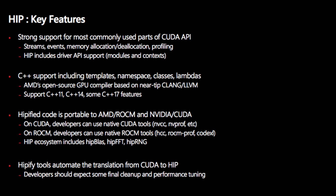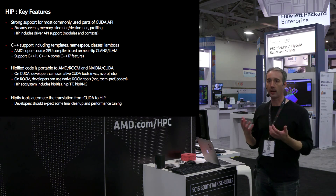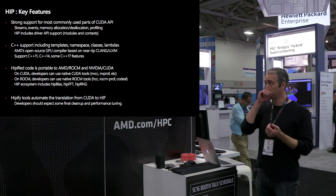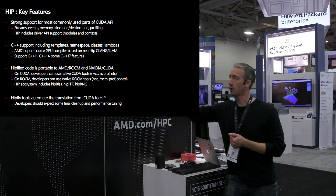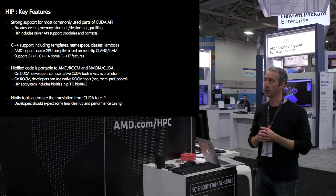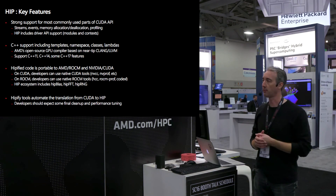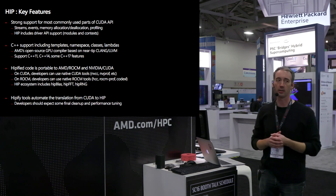As a summary of key features: we have strong support for the most commonly used parts of the CUDA driver API — streams, events, memory management, memory allocation and deallocation, and profiling APIs. We just added support for the driver API, which is the ability to load code modules explicitly. Full C++ support — templates, classes — works on both paths because we built C++ compilers. We're also starting to add portable implementations of BLAS, FFT, and RNG that can run on both platforms, plus tools that automate the translation.